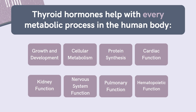According to the American Thyroid Association, an estimated 20 million people in the United States have some form of thyroid disease. You may not have realized, but thyroid hormones help with every metabolic process in the human body, from cellular metabolism and protein synthesis, to supporting normal growth and development in children, even supporting cardiovascular, nervous, kidney, pulmonary, and hematopoietic systems function. You name it, thyroid hormones help with it all.